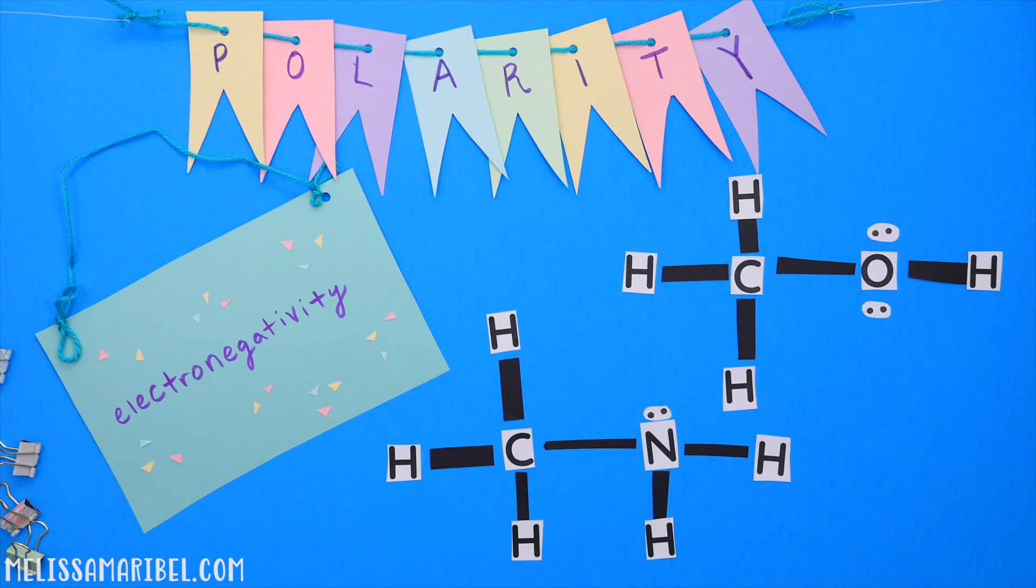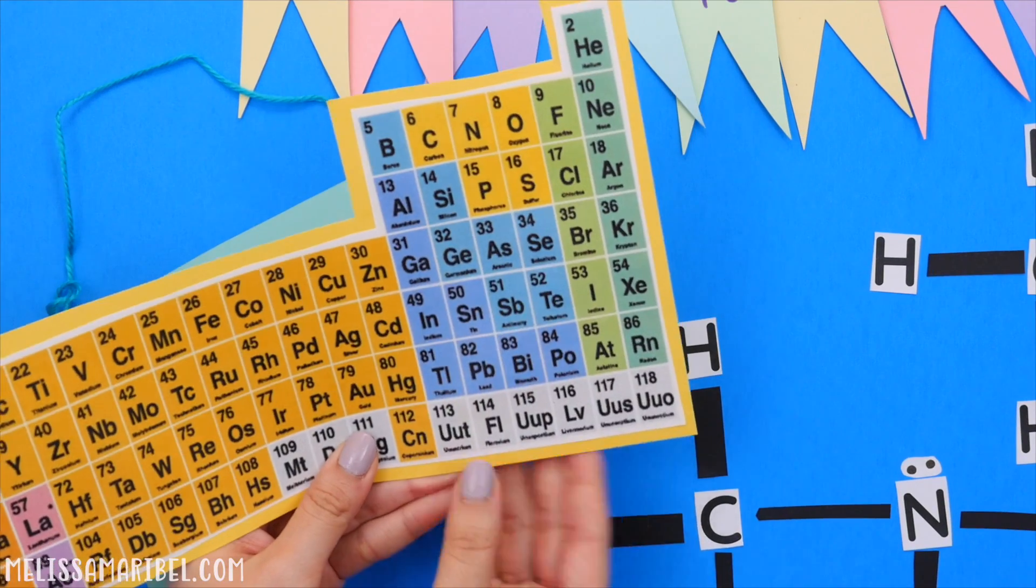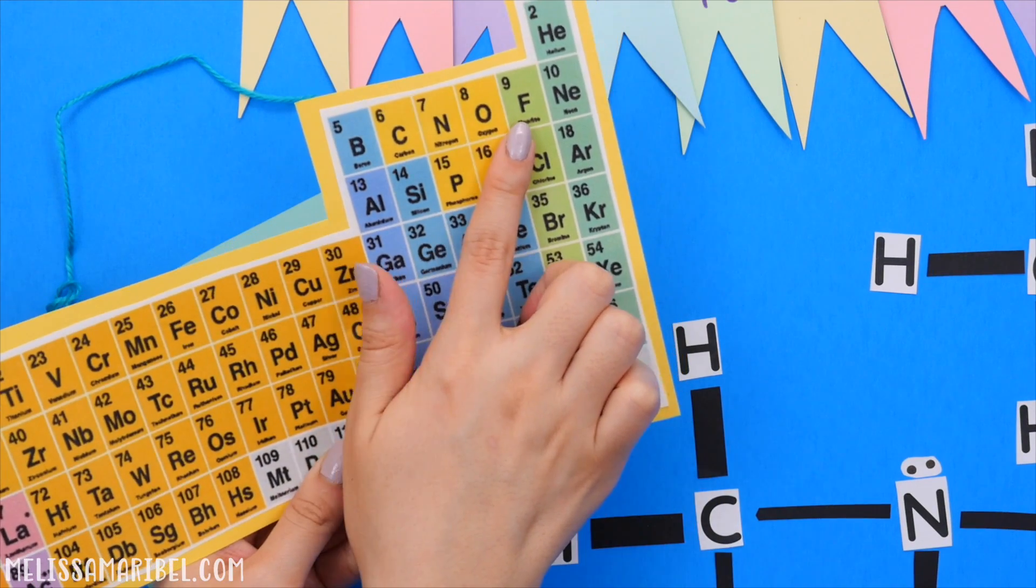Looking at our examples, let's figure out which structure is the most polar. Though both structures are polar, this structure is the most polar since oxygen is closest to fluorine.